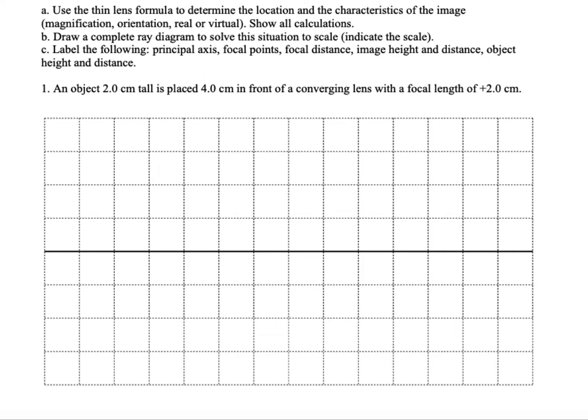Alright, so what we're going to do is we're going to do a construction using a converging lens. Now this converging lens, it has a focal length of two centimeters. We also want an object placed four centimeters in front of the lens. So you want to use the grid for this kind of thing and just try to leave yourself enough room so that you can do the whole construction.